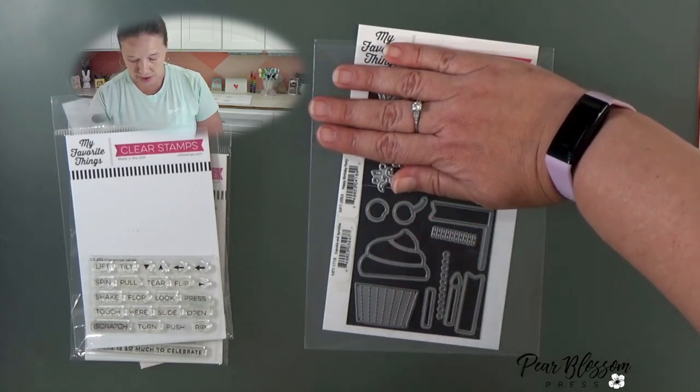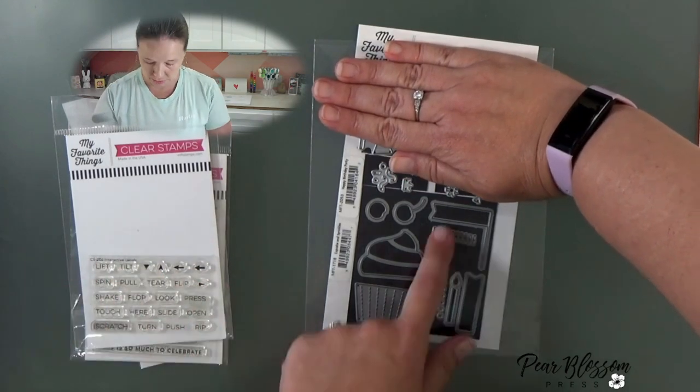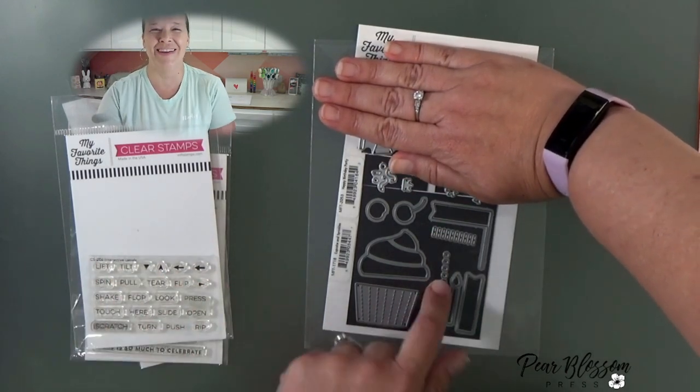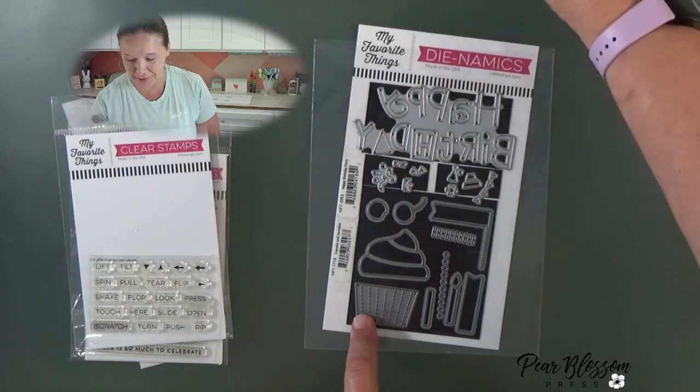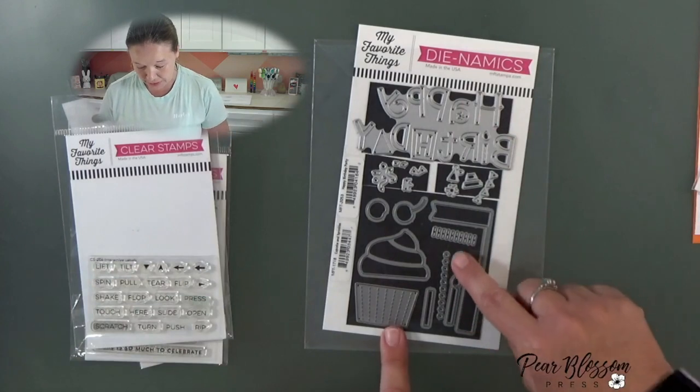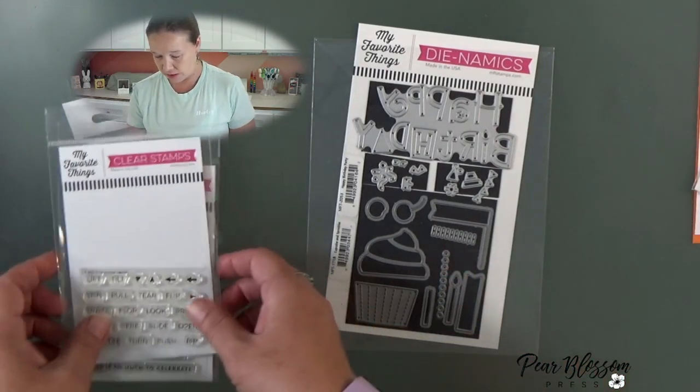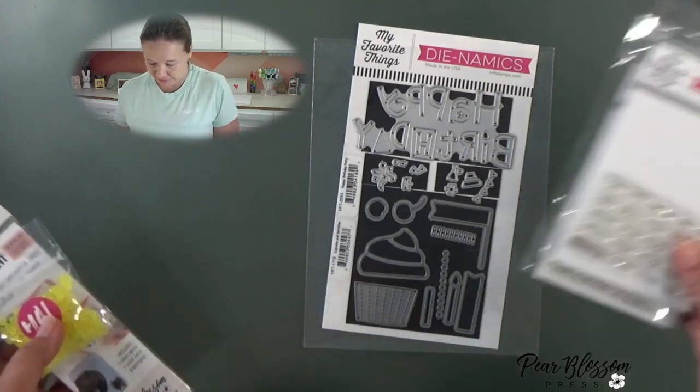The dies that we used are all from My Favorite Things as well. This is called the cupcake and sprinkles die set. Now I didn't want to cut out sprinkles times 50, so I'm cheating and using these little clay embellishments. But the die set has a couple different options there if you're going to make this at home and you want something a little bit flatter.